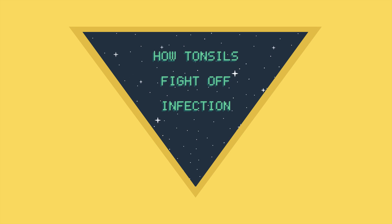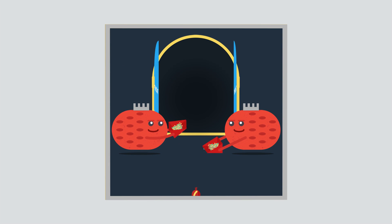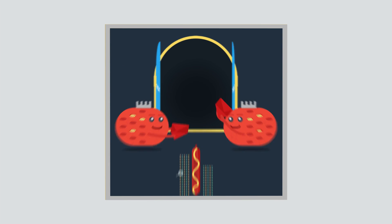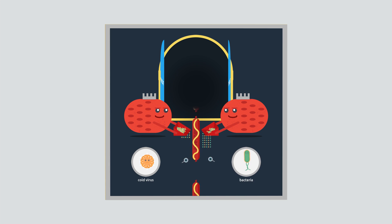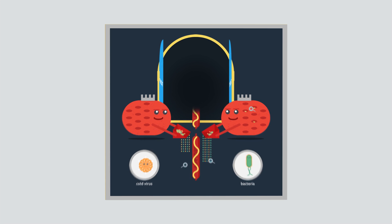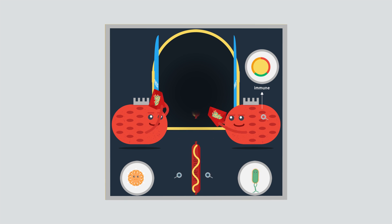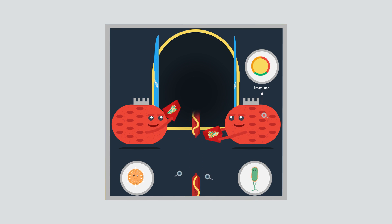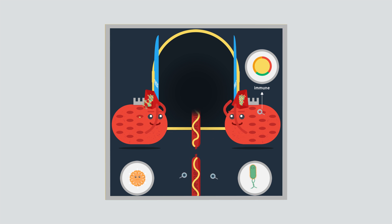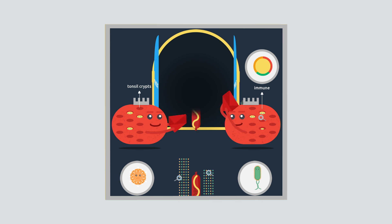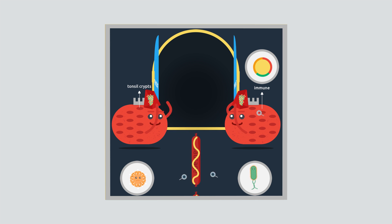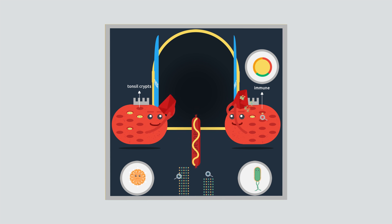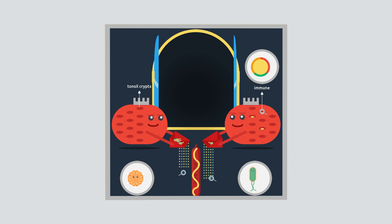How Tonsils Fight Off Infection. The tonsils act like a sentry point for the throat, picking up viruses, bacteria, or particles which are breathed in or swallowed and relaying these to the immune system. To help with this role, the surfaces of the tonsils are pitted with a number of little recesses, also called tonsil crypts. These increase the surface area of the tonsils, relaying more viruses and bacteria to the immune system.